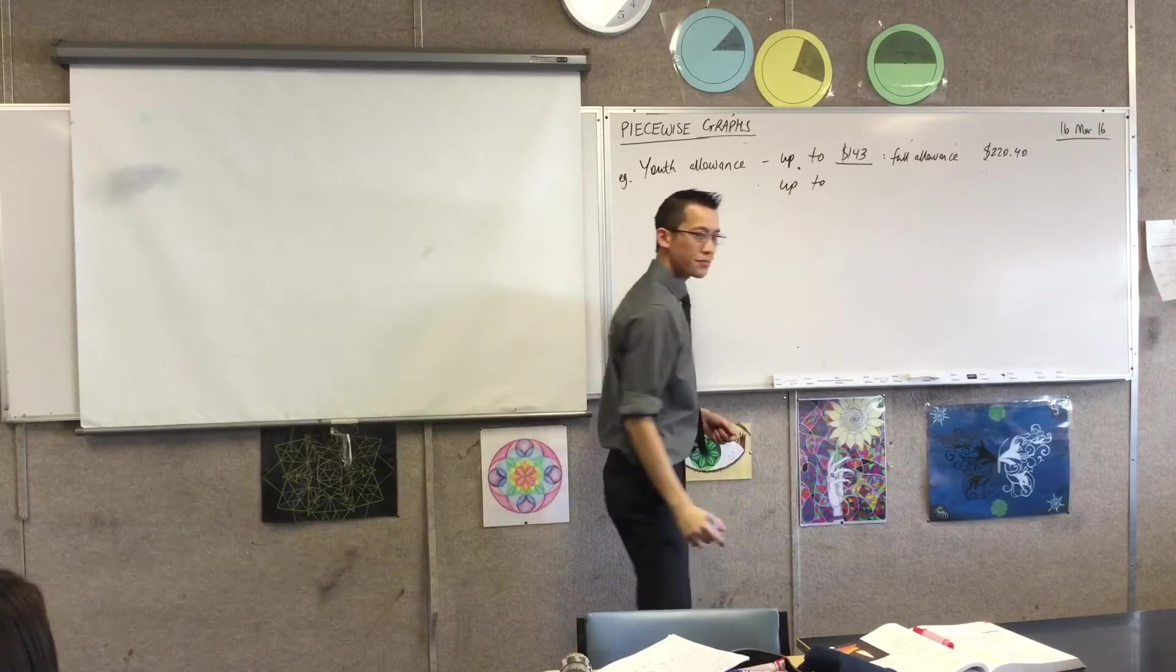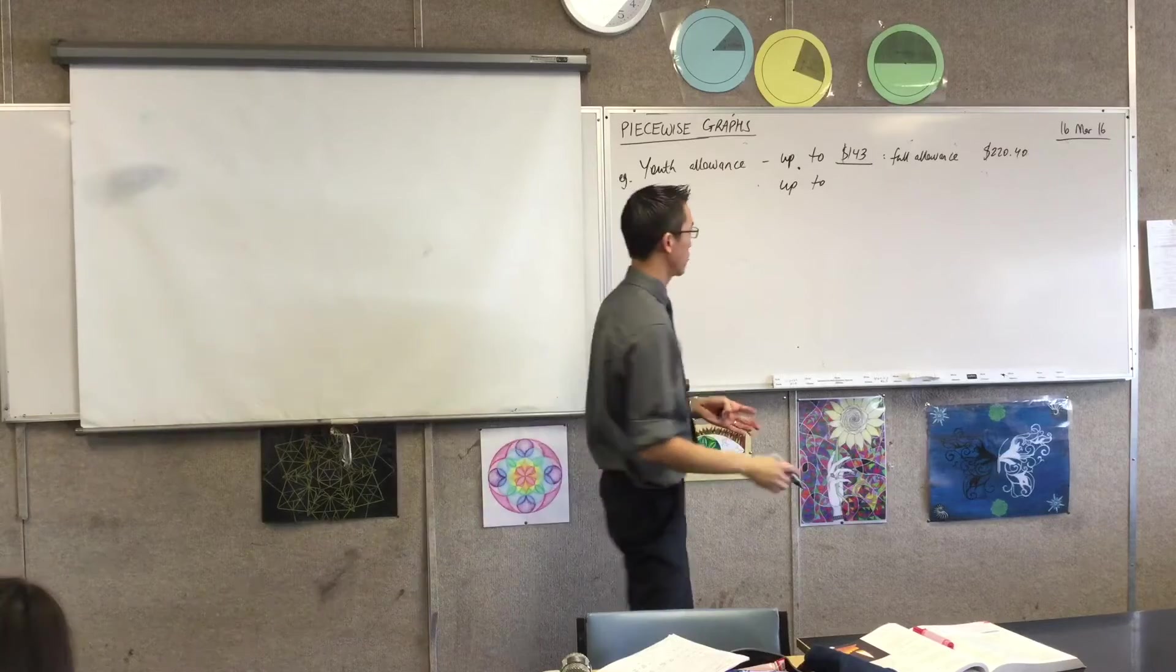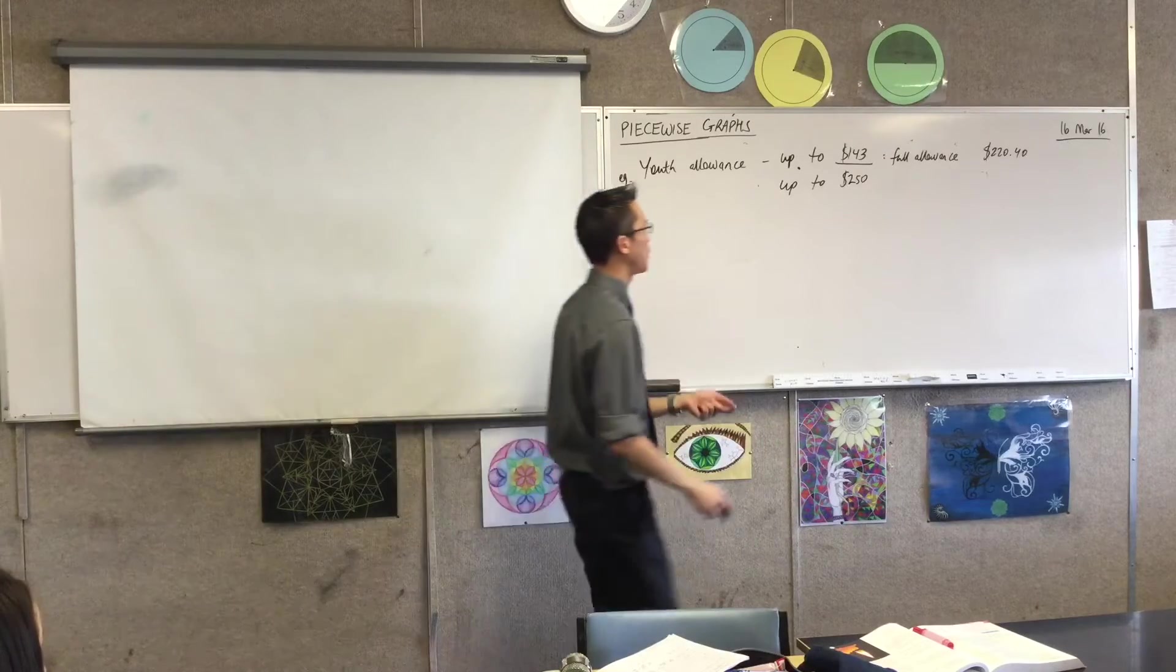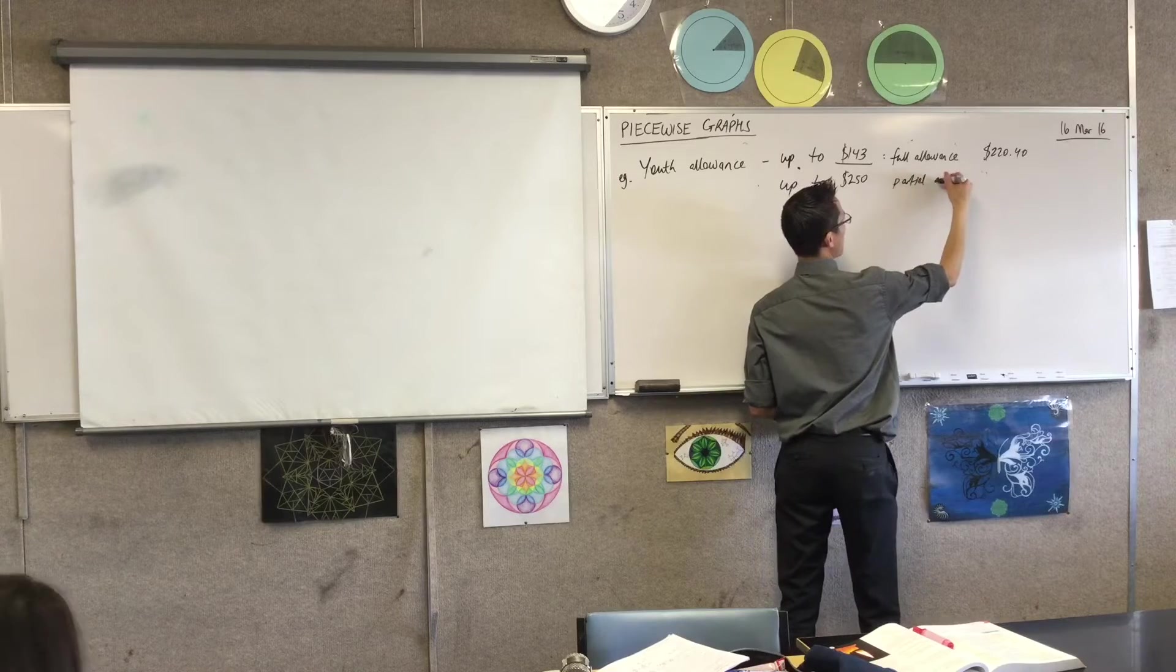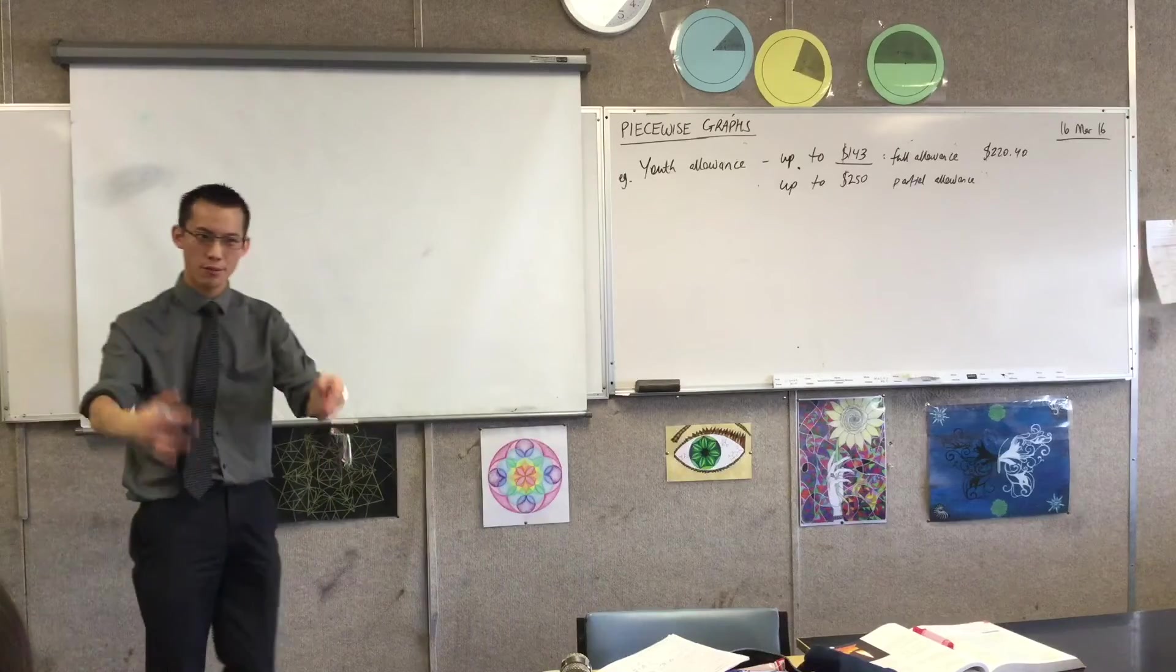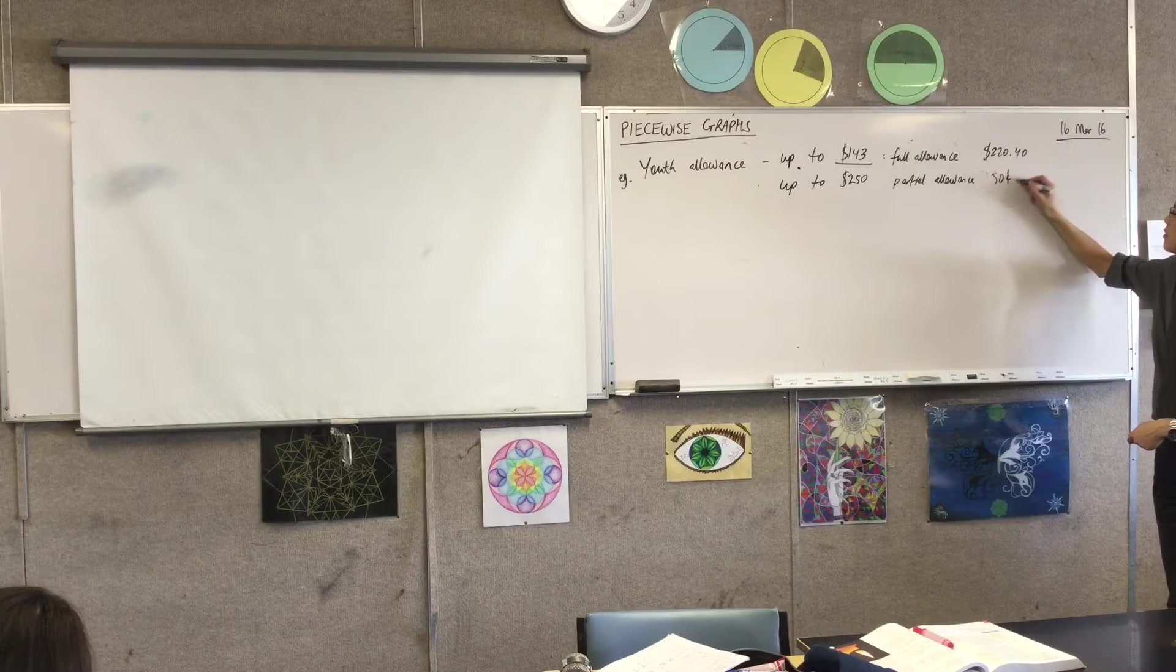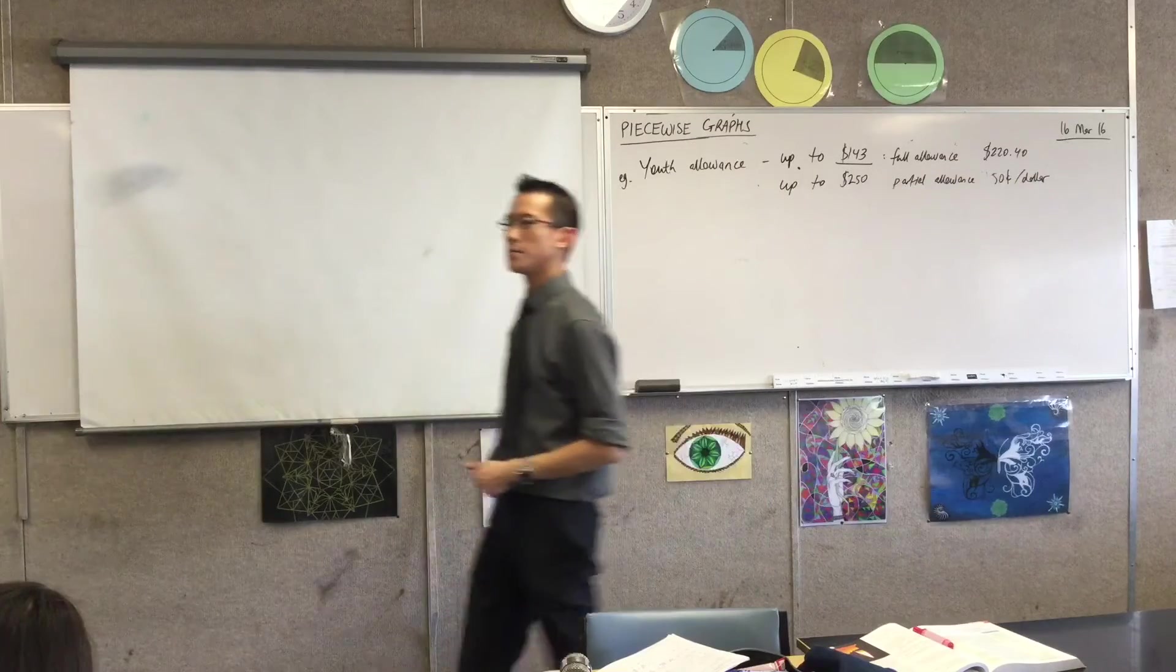So, up to, now, if you're unemployed, not a student, I'm just going to go, because these numbers are a bit easy to work with. It is $400 if you are a student, a full-time student. But if you're not, up to $250, you'll get a partial allowance, right? Now, what they do is they take, they start to make the allowance smaller, and smaller, and smaller, by $0.50 in the dollar. So, they reduce it by $0.50 in every dollar above that.